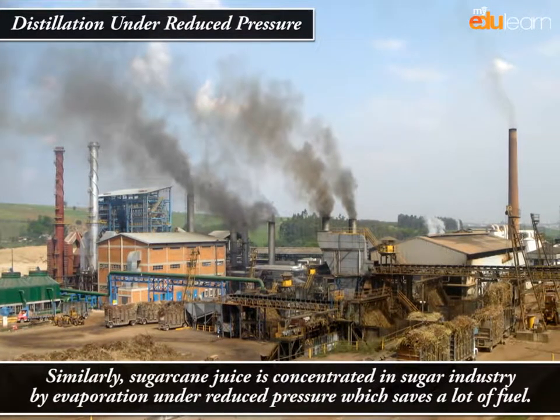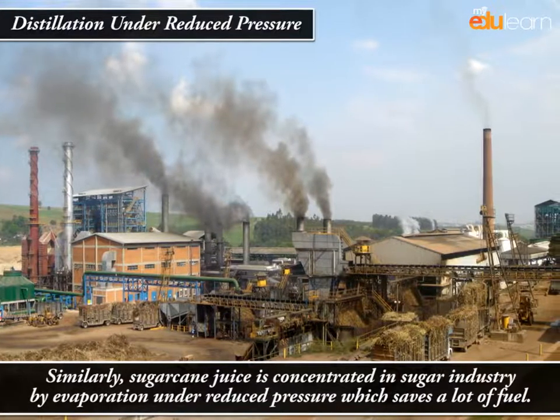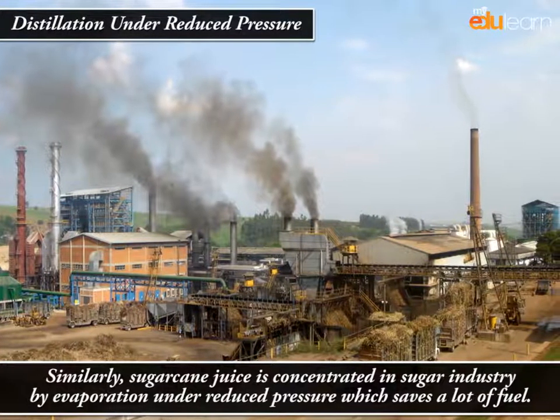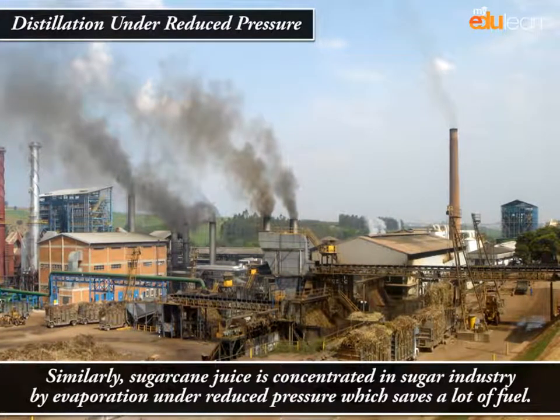Sugar cane juice is concentrated in the sugar industry by evaporation under reduced pressure, which saves a lot of fuel.